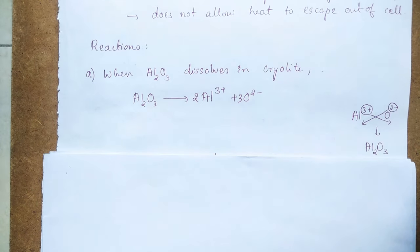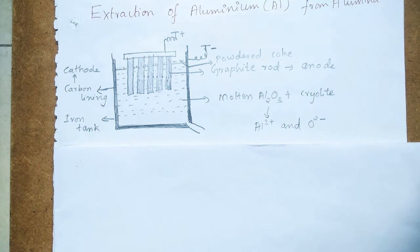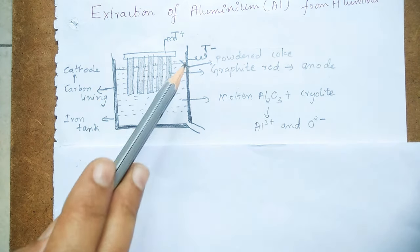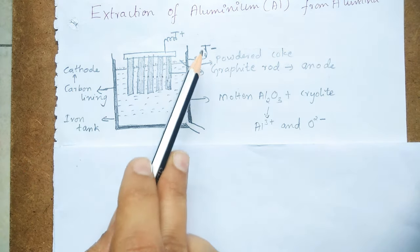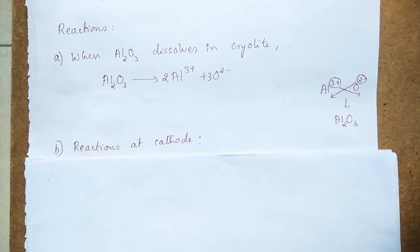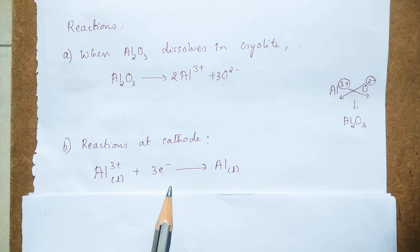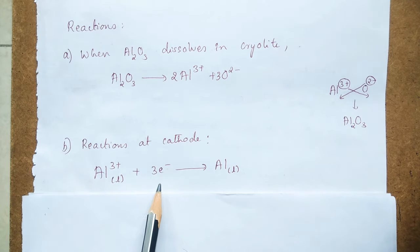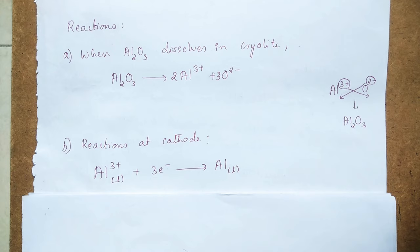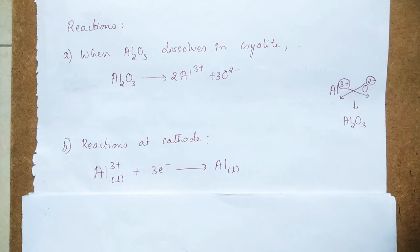The iron tank lined with carbon acts as cathode or negative electrode. Since cathode is a negative electrode, it is rich in electrons and attracts the positively charged aluminium ions towards itself. The aluminium ion, which has a deficiency of 3 electrons, takes up 3 electrons from the cathode, forming liquid aluminium. It is in liquid form because the temperature of the cell is very high. Addition of electrons to aluminium ion takes place here, so this reaction is called reduction.